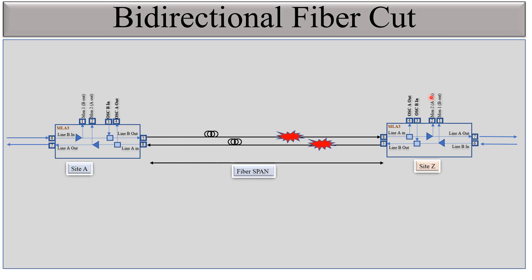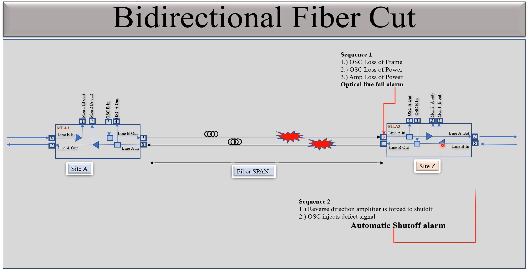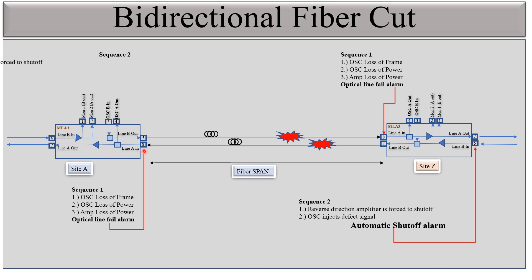When both fibers are cut, there will be optical line fail alarms on both amplifiers at port number 8. The reverse direction amplifier will be shut off and the automatic set-off alarm will appear on port number 6. In the same way, optical line fail alarm appears on the other amplifier port number 8, and the automatic set-off alarm appears on that amplifier's port number 6. This is all about the automatic set-off alarm, which appears when no signal is received on the upstream direction amplifier on the same side. Thank you for watching.